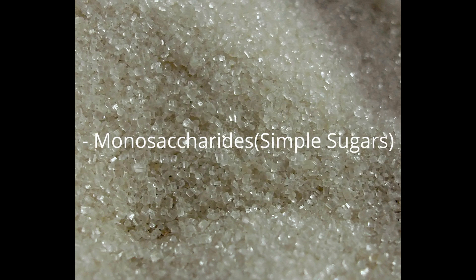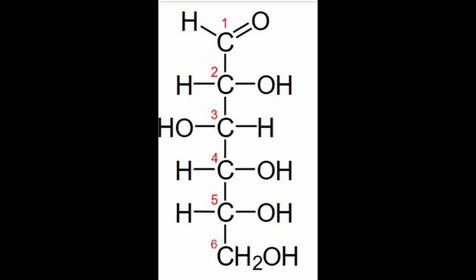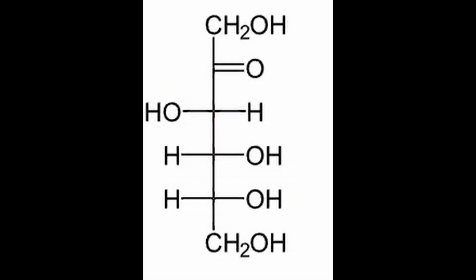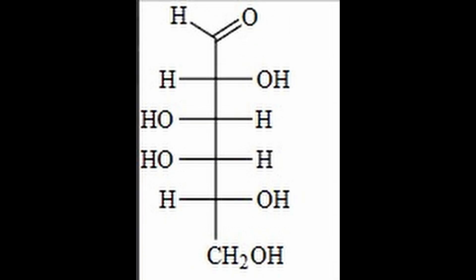Monosaccharides, or simple sugars, are the basic building blocks of carbohydrates, consisting of a single sugar molecule. Examples of these are glucose, found in blood sugar and essential for energy; fructose, found in fruits and honey; and galactose, which is part of the lactose in milk.